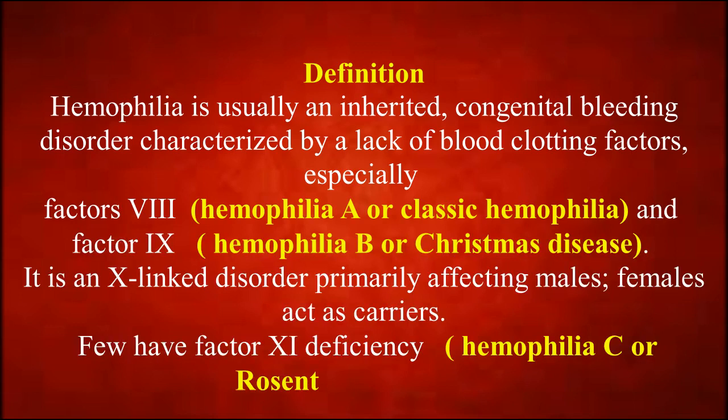Hemophilia is usually an inherited congenital bleeding disorder characterized by a lack of blood clotting factors, especially factor 8 (hemophilia A or classic hemophilia) and factor 9 (hemophilia B or Christmas disease). It is an X-linked disorder primarily affecting males; females act as carriers. A few have factor 11 deficiency, known as hemophilia C or Rosenthal syndrome.